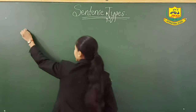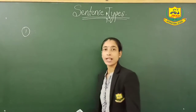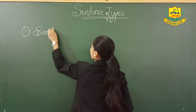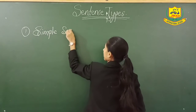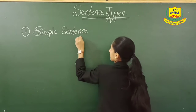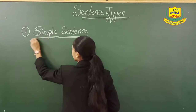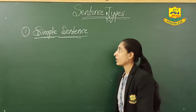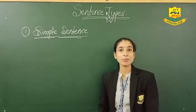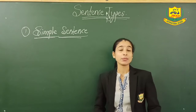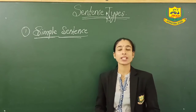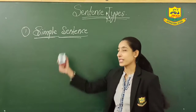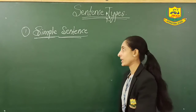So the first sentence type, as I told you, is simple sentence. I will not write the definition right away, because we will see one example first, and with the help of that example we will come to know about the meaning of simple sentences — what are simple sentences?